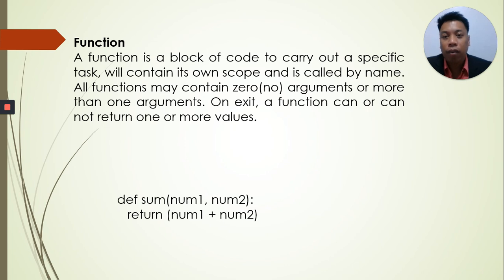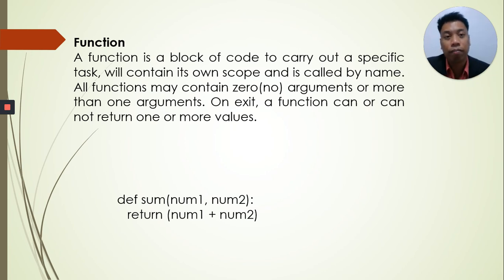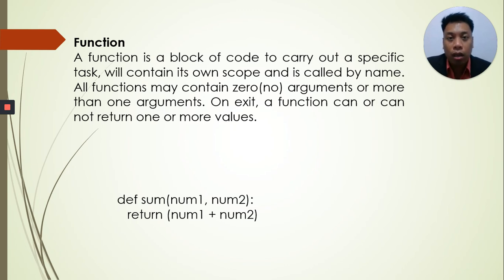Now let's go to functions. A function is a block of code to carry out a specific task that contains its own scope and is called by name. All functions may contain zero or more than one argument. On exit, a function can either return a value or not return a value. In our example, we have the function sum. In Python, when we create a function, we use the keyword def — D-E-F. So in our example, we use def, then the function sum, and the arguments num1 and num2. The return value is num1 plus num2, which is the sum of two numbers.